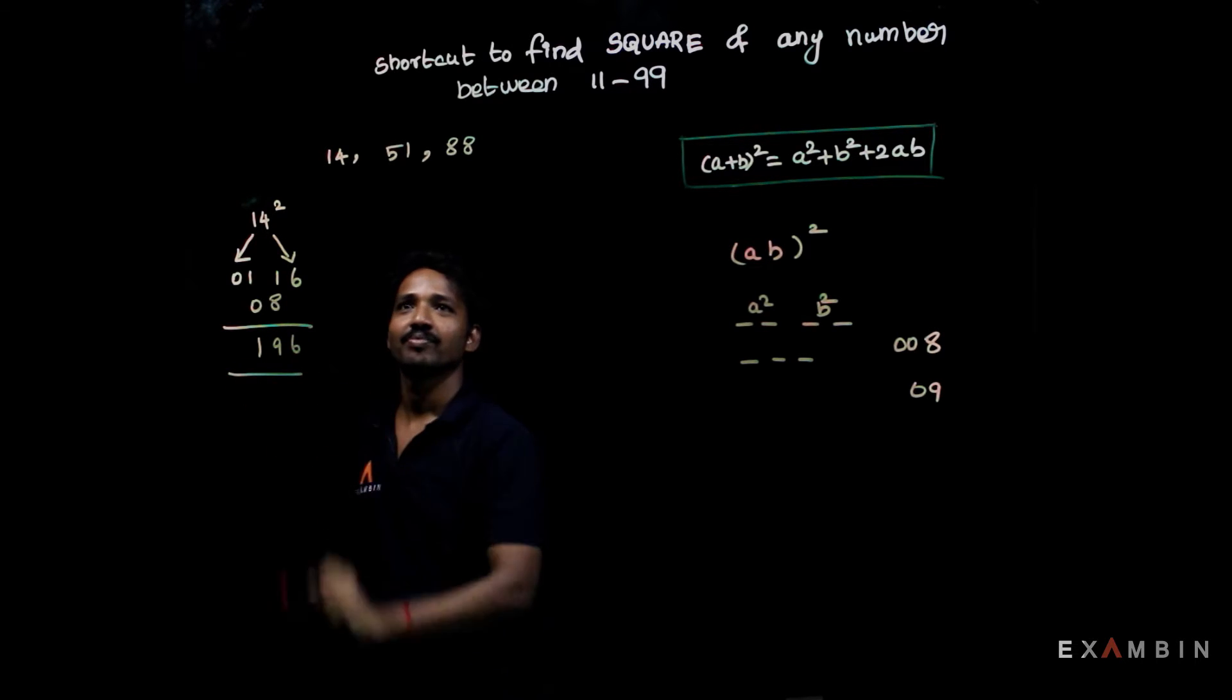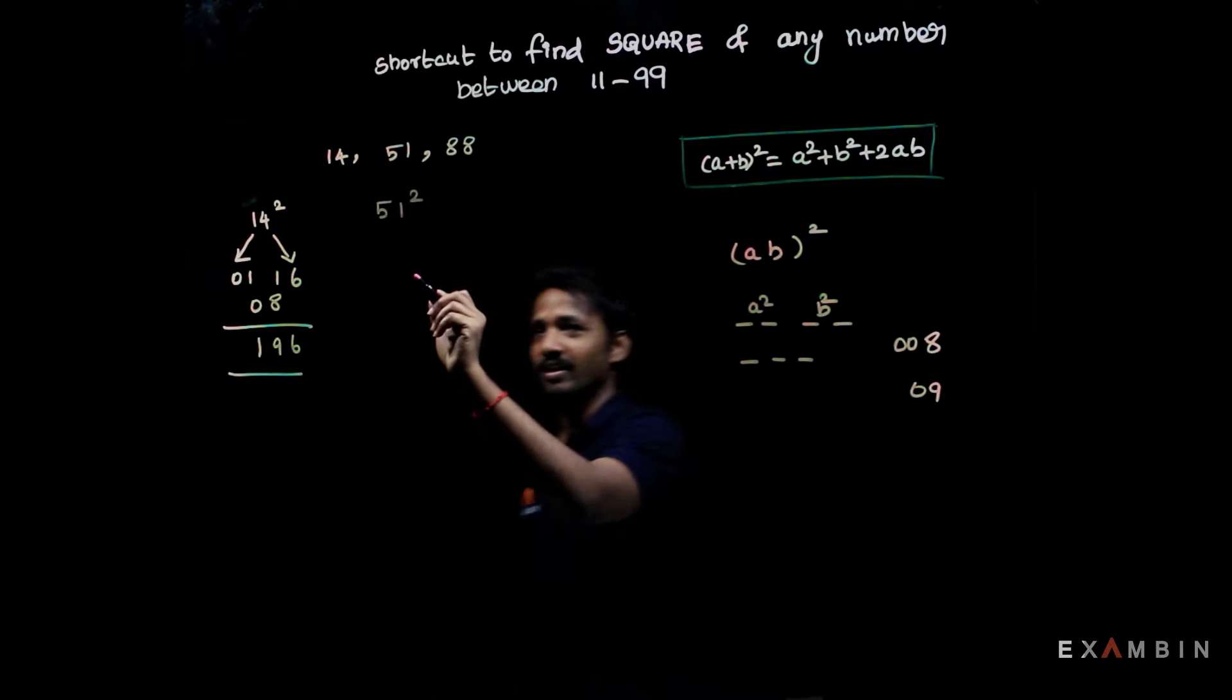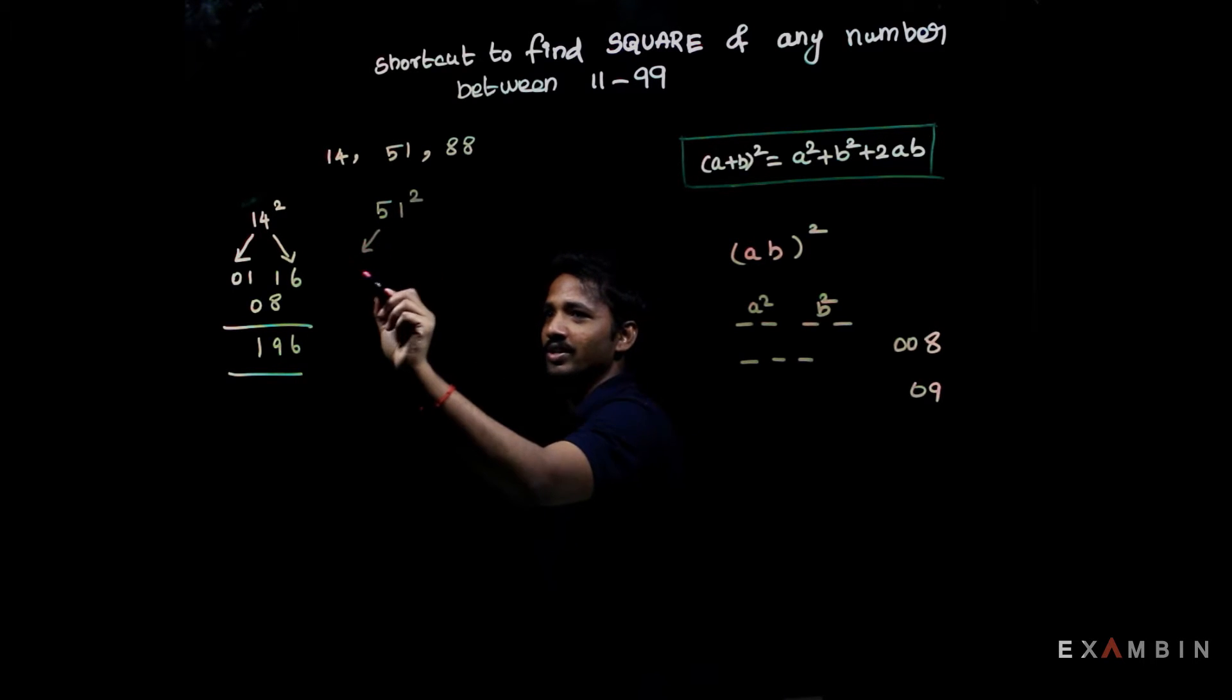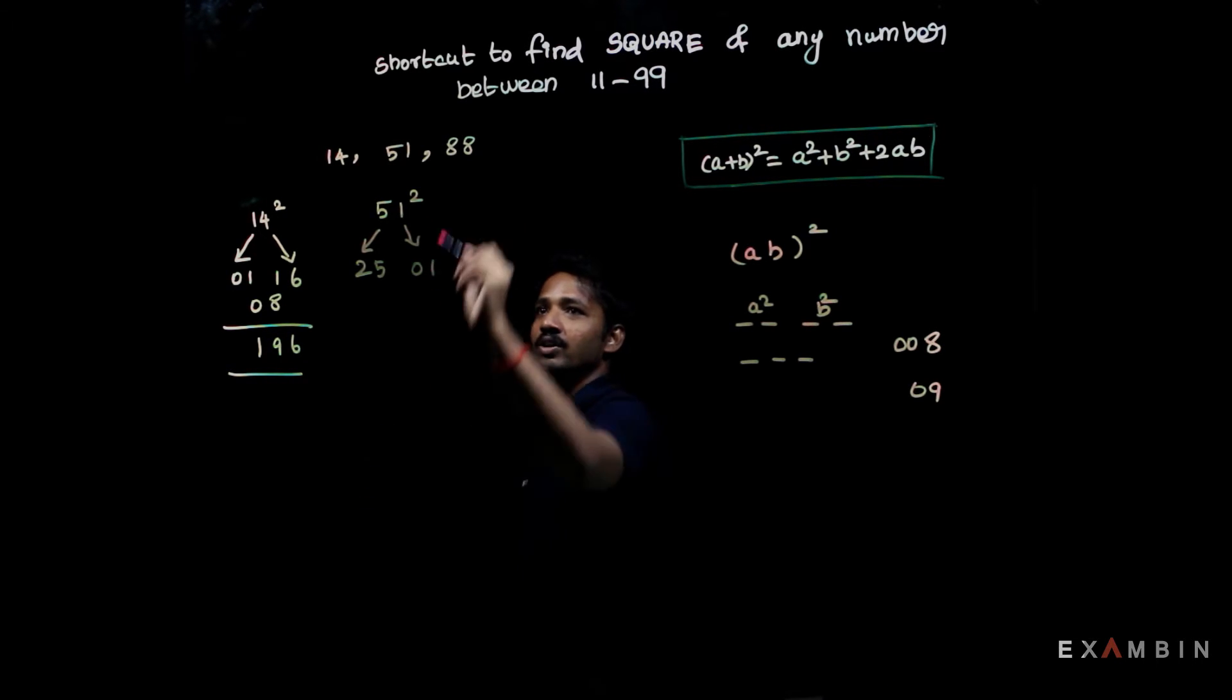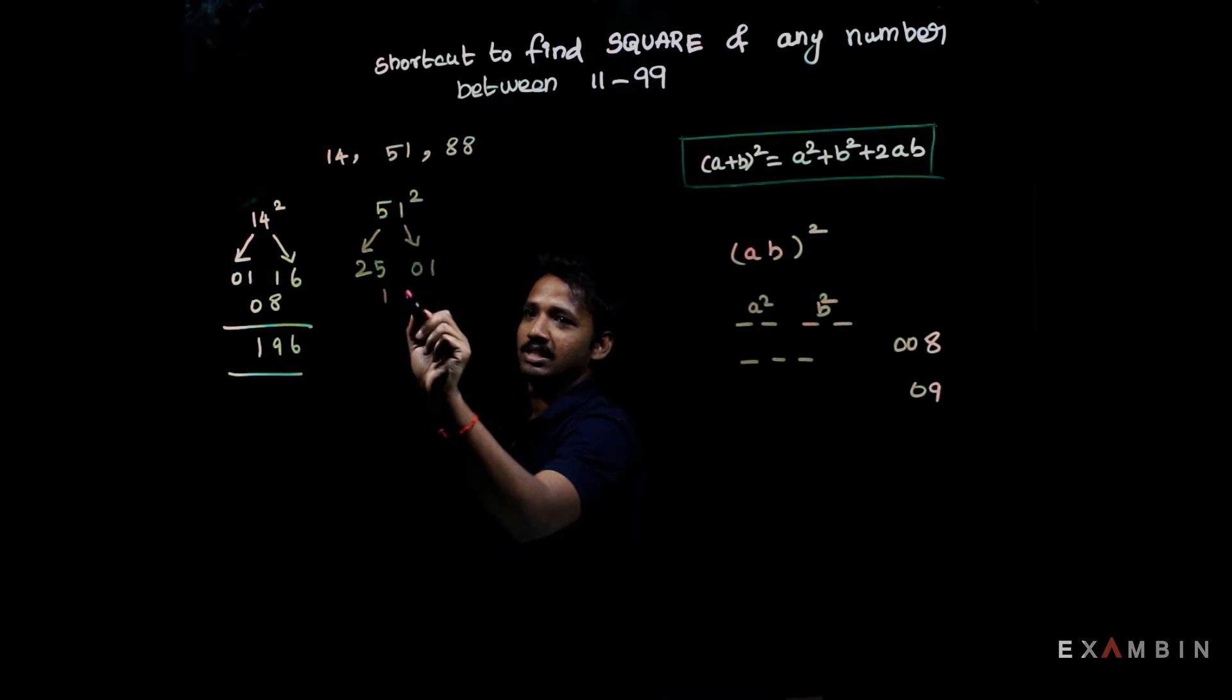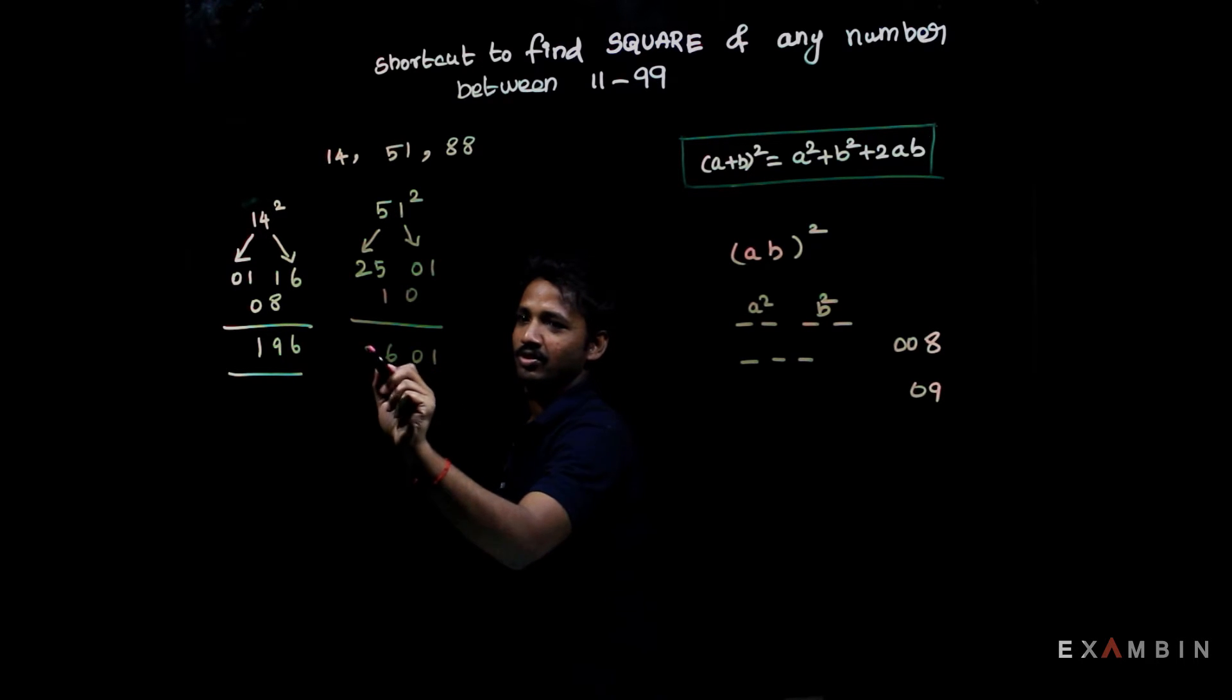Now we will come to 51. 51²: 5² = 25, 1² = 01, 2 × 5 × 1 = 10. So the answer would be 2601.